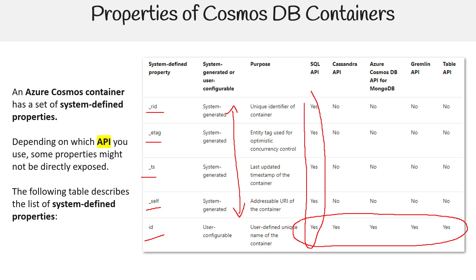To read through these quickly: we have the unique identifier for the container, the entity tag used for optimistic concurrency control, the last updated timestamp of the container, the addressable URI for the container, and the user-defined unique name for the container. There are more than these, but these are the key ones. Next, let's talk about capacity for containers.